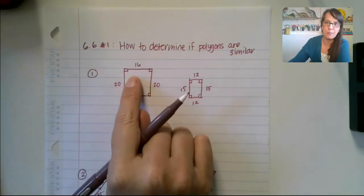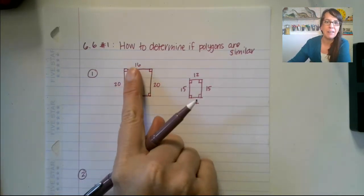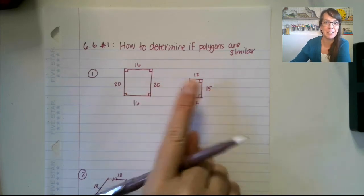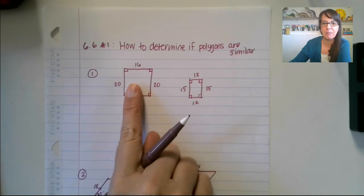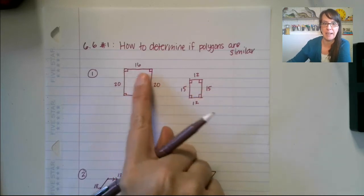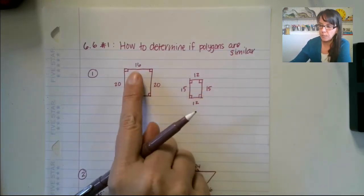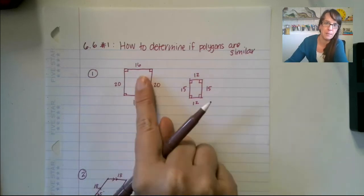Alright, so for these guys we have two squares here, not squares, I'm sorry, two rectangles. They're not squares because they would be the same side all the way around, but they are rectangles and we know that because we've got four right angles in here. Okay, so what we want to do, there's actually two different ways to do this to compare if these are similar.